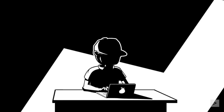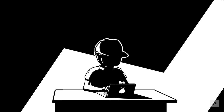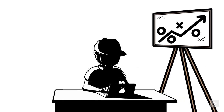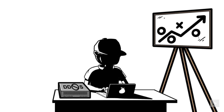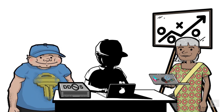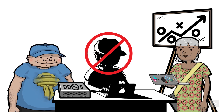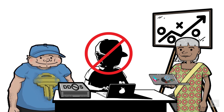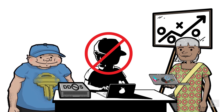Either way, denial of service hits directly at one of the principles of security: availability. Companies should have strategies to protect their critical services against these types of attacks, including correct sizing and growth planning, implementing technologies to help control the load, and tools that let their teams and analysts catch anomalies quickly so they can respond faster to incoming threats.